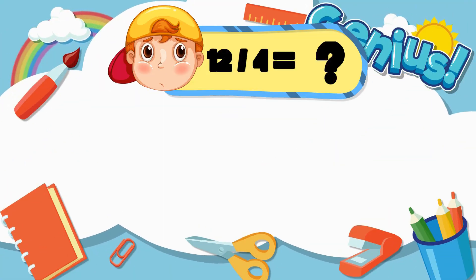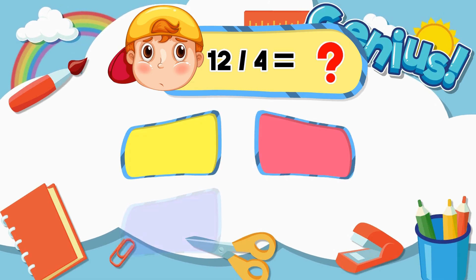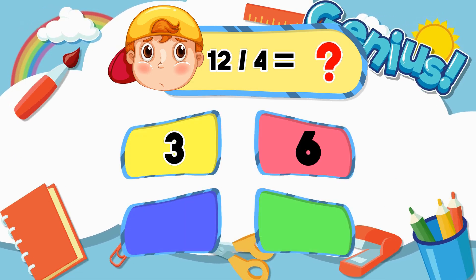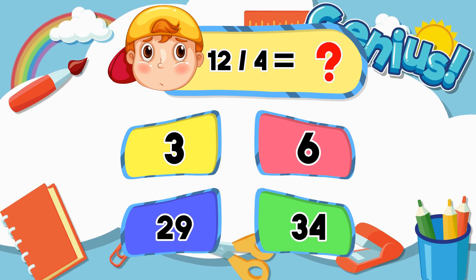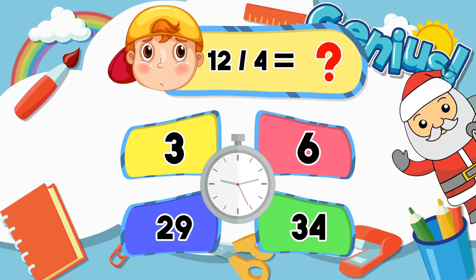What is 12 divided by 4? Options: 6, 29, 34, 3, 30. Answer: 3.